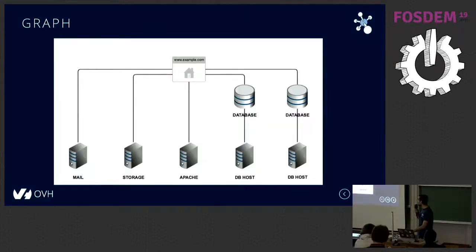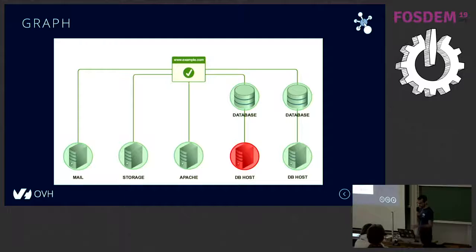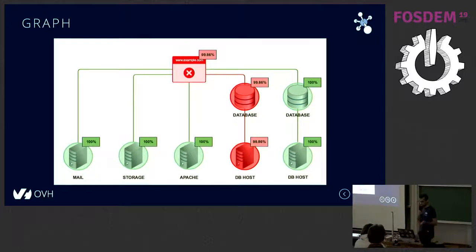For example, for a .com website, we can imagine this kind of architecture. When all nodes are working fine, the website is up. But if the DBS is not working anymore, the database is down and the website will be down too. So we can both find the root causes and also get a QoS for example.com.